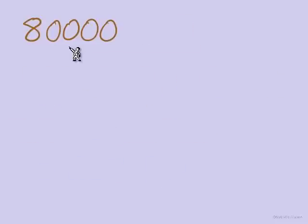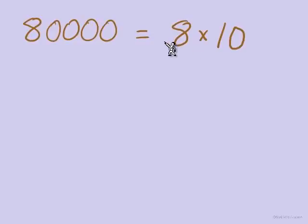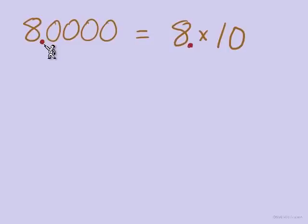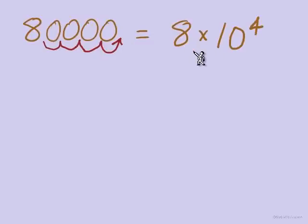Let's do another example: 80,000. We pull off the non-zero digit, the 8, and put the decimal point right behind the 8. From there, we need to move 1, 2, 3, 4 places. So we're multiplying by 10 four times: 8 times 10 to the 4th.